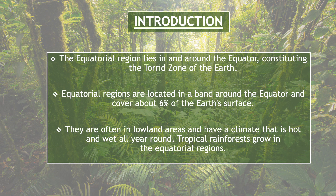Equatorial regions are often in low land areas and have a climate that is hot and wet all year around. Tropical rainforests grow in the equatorial regions. इस region में काफी गर्मी होती है और पूरे साल बारिश होती है, और इन areas में जितने भी forests होते हैं उन्हें tropical rainforests कहते हैं. Rainforest can be described as a tall and dense jungle, receiving a high amount of rainfall throughout the year.